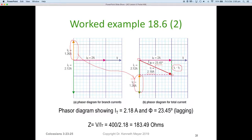In this particular diagram, the I total is 2.18 amps with an angle of 23.45 degrees lagging. The total Z for the circuit, Z equals voltage divided by current, so 400 divided by 2.18 gives us a Z total of 183.49 ohms.